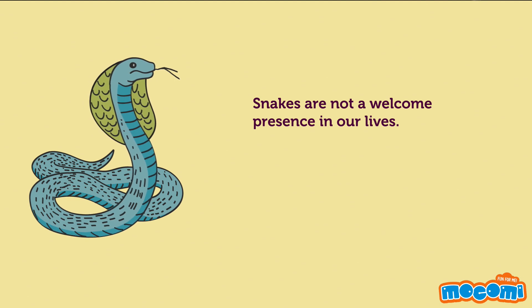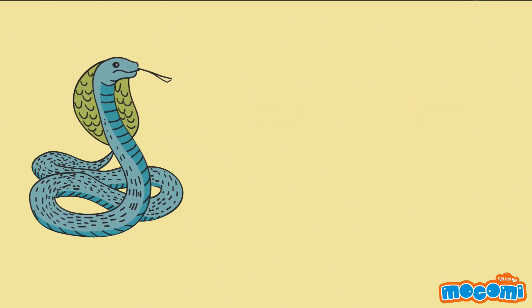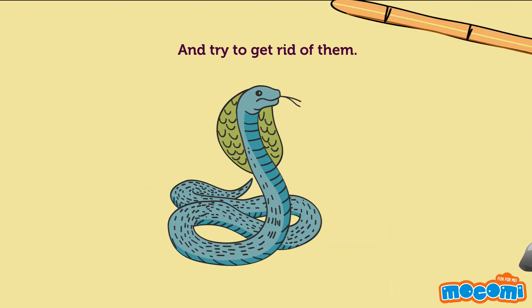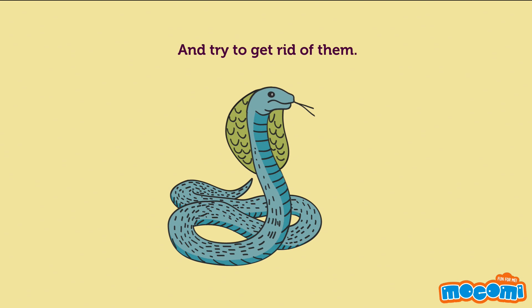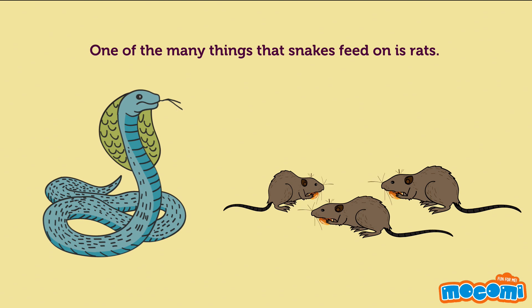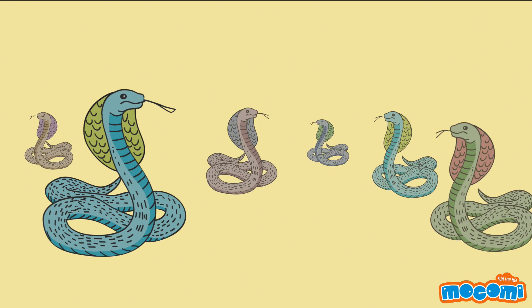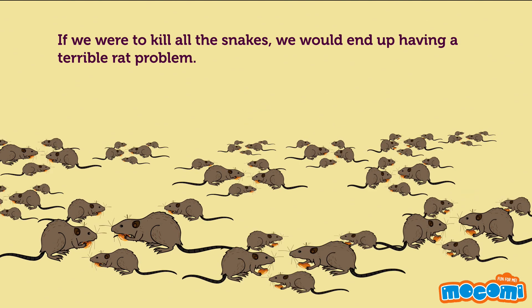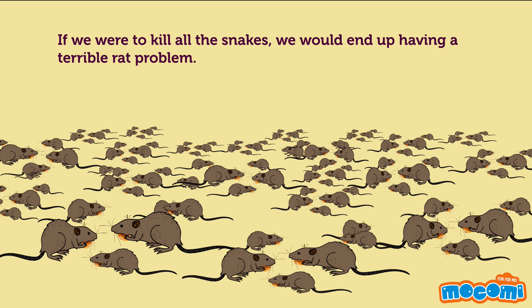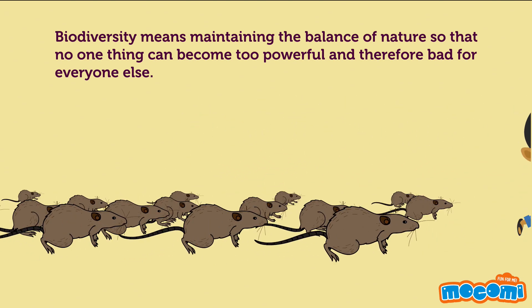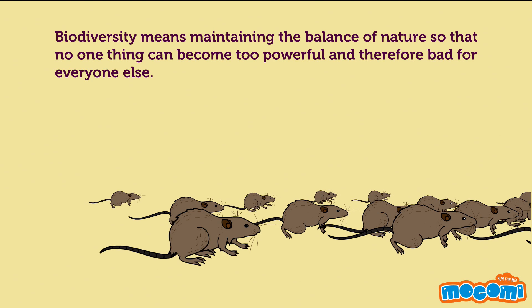Snakes are not a welcome presence in our lives, so we fear them and try to get rid of them. One of the many things that snakes feed on is rats. If we were to kill all the snakes, we would end up having a terrible rat problem. Biodiversity means maintaining the balance of nature so that no one thing can become too powerful and therefore bad for everyone else.